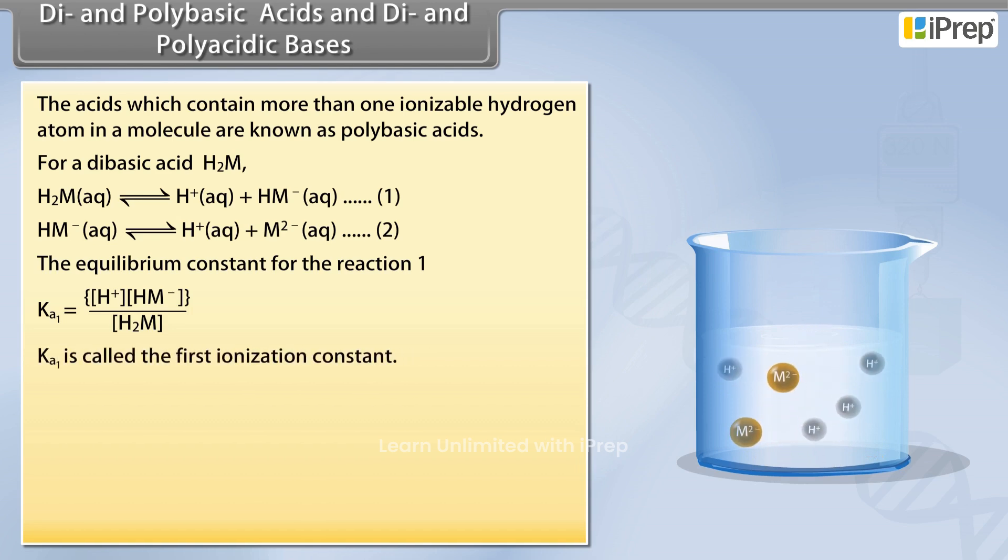Ka1 is called the first ionization constant. The equilibrium constant for the reaction 2. Ka2 is equal to [H+][M2-] by [HM-].